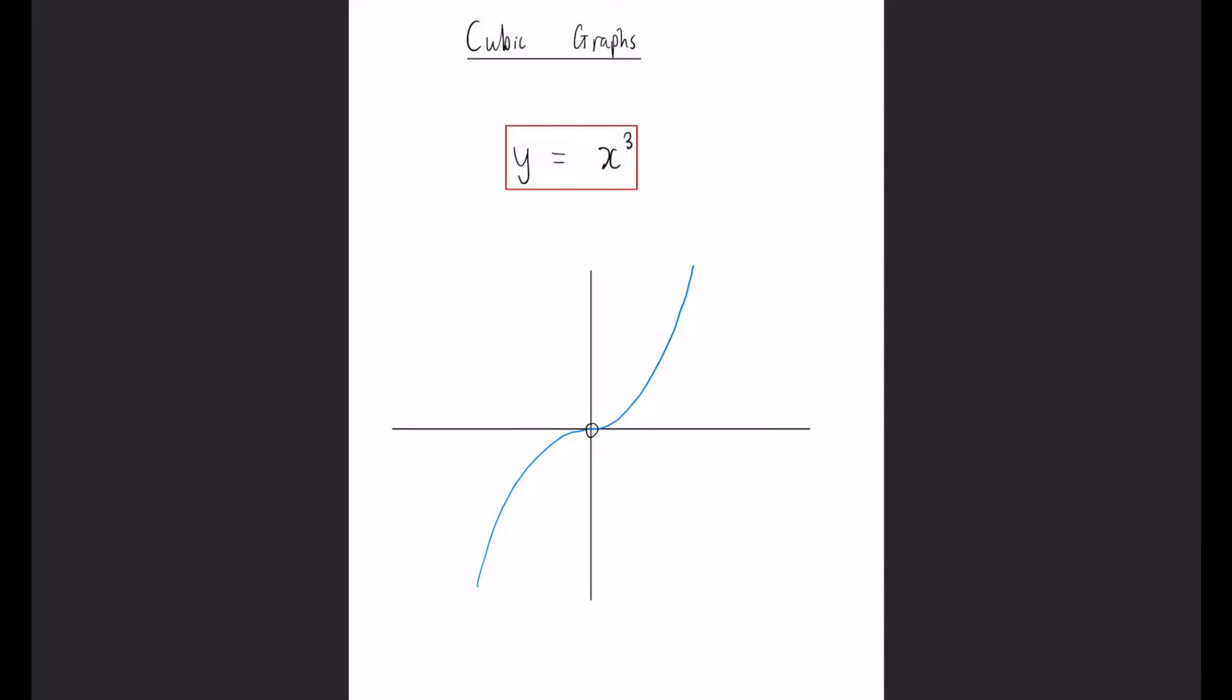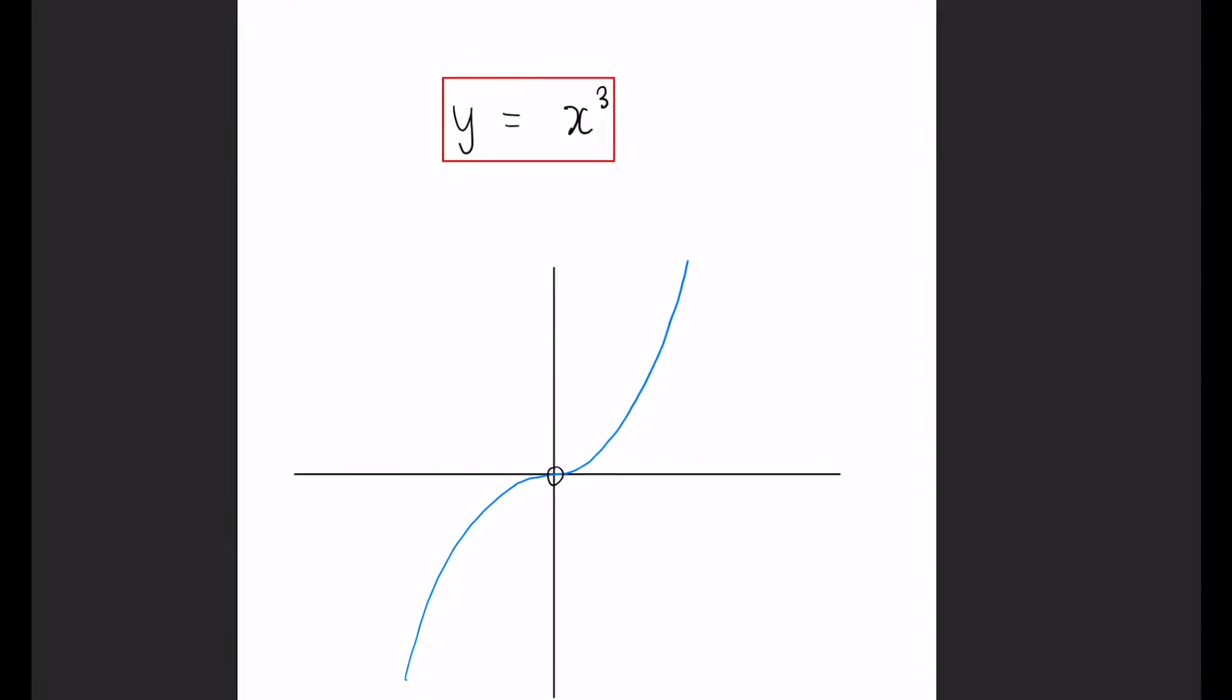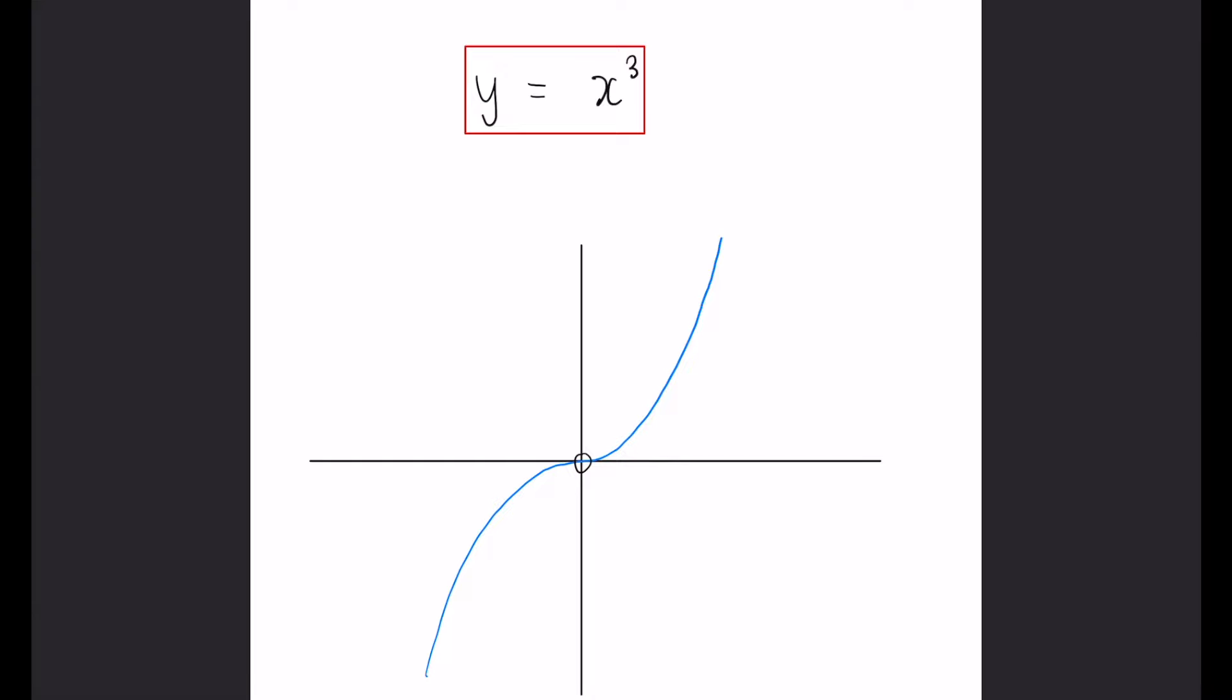So, cubic graphs, rather than the classic U or N shape like a quadratic, cubics have more of a wiggly S type shape. As you can see here on our first page, Y equals X cubed. This is the most standard type of cubic graph you can get.